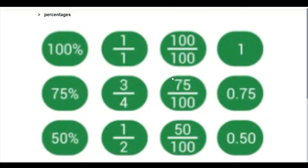Now look at 75 over 100. We start to reduce: 5 goes into both 75 and 100, giving 15 over 20. Then dividing by 5 again, or dividing by 2, we get 3 over 4. When you divide 75 by 100, it gives 0.75, which is 75 percent.